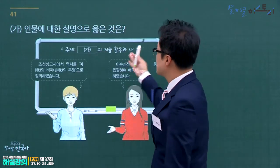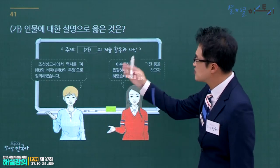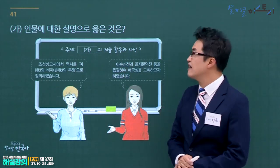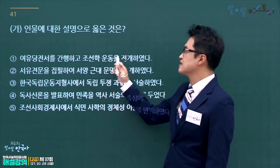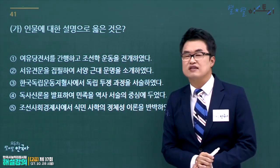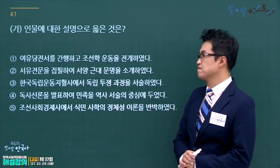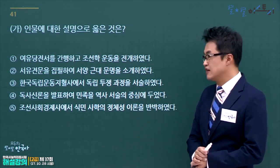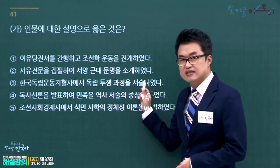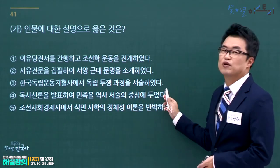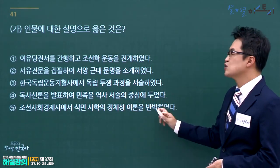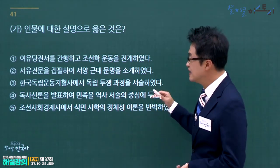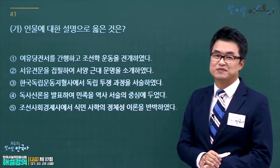조선상고사·을지문덕전·이순신전을 저술한 인물은 신채호입니다. 신채호에 대한 설명으로 옳은 것을 고릅니다. 여유당전서와 조선안운동은 정인보, 서유견문은 유길준, 한국독립운동지혈사는 박은식입니다. 독사신론을 저술한 것이 신채호이므로 정답은 4번입니다.